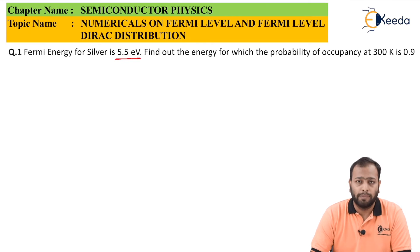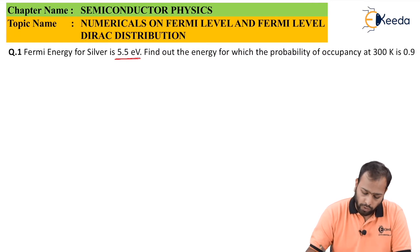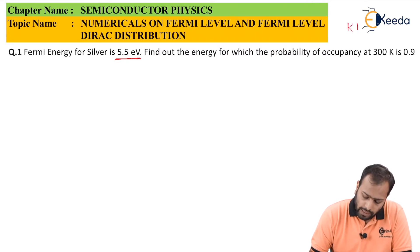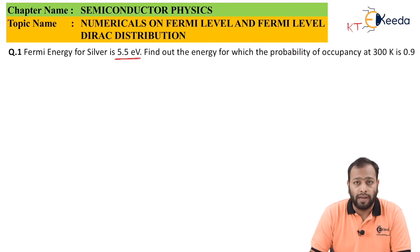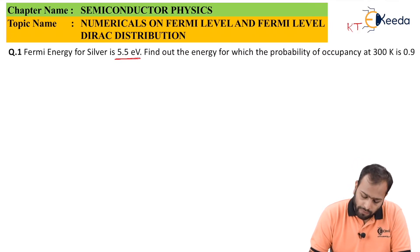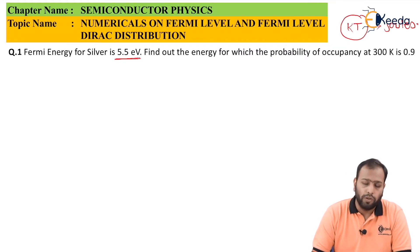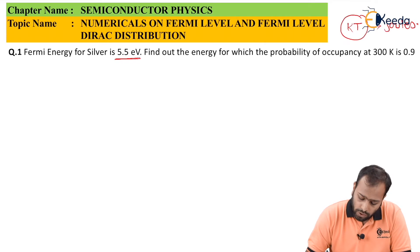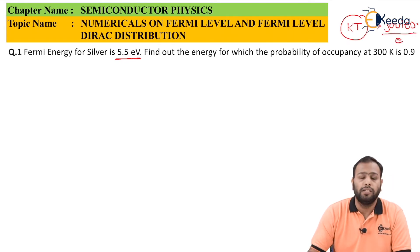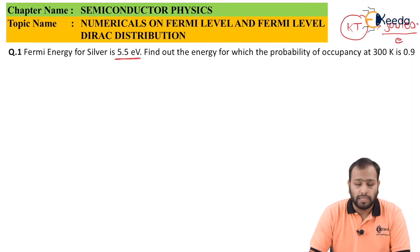The most important point — and where most mistakes happen — is the conversion. Always remember your KT: you will always have a term KT in such numericals, which gives you a value in joules. Always remember K is the Boltzmann constant and temperature is in Kelvin. If you multiply them, the value you get by default will be in joules.